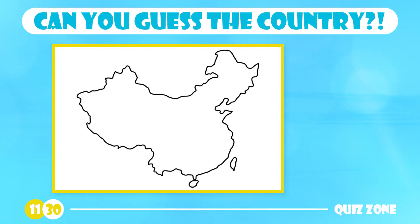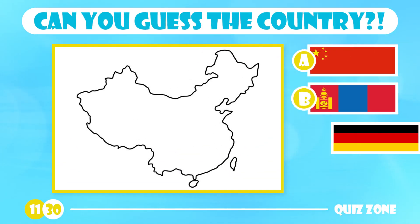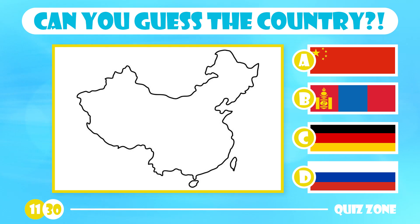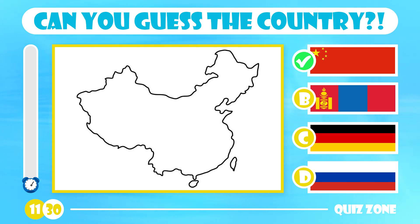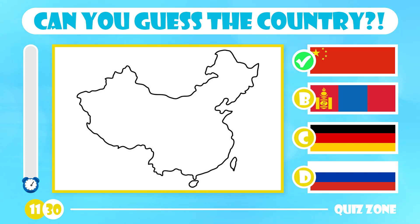Can you name this country? Is it China, Mongolia, Germany or Russia? China is located in East Asia and is the world's most populous country with over 1.4 billion citizens living there. Since economic reforms in the 1970s, China's economy has become one of the fastest growing.